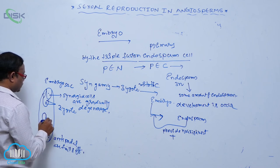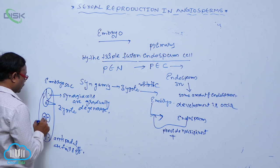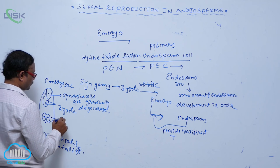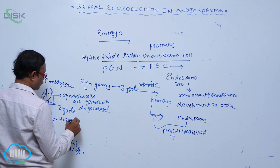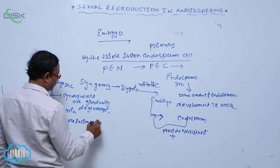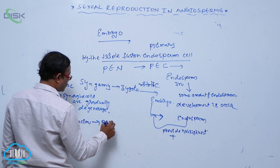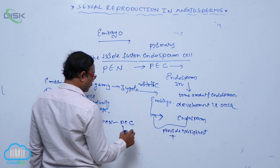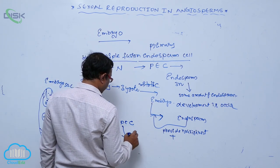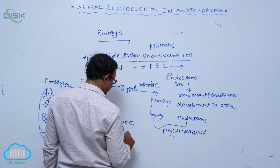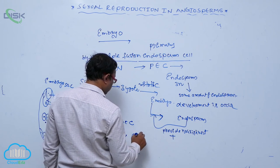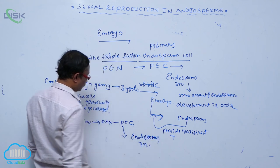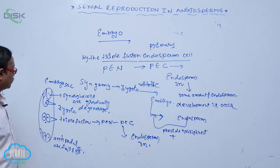By triple fusion, the polar nucleus and the secondary nucleus fuse with a male gamete to form the primary endosperm nucleus. After that, the primary endosperm cell undergoes a number of free nuclear divisions, followed by cellularization, to form the endosperm. This endosperm is in a 3N condition, providing nourishment for the development of the embryo.